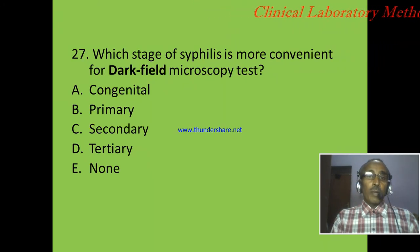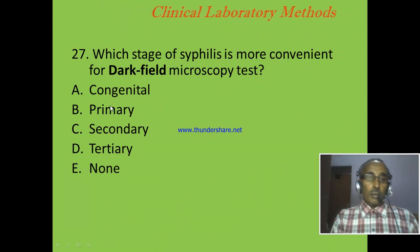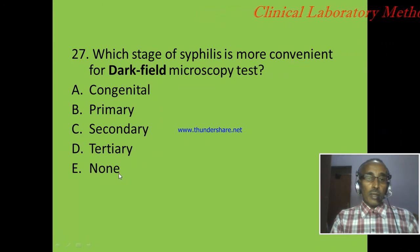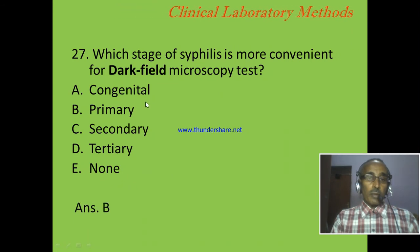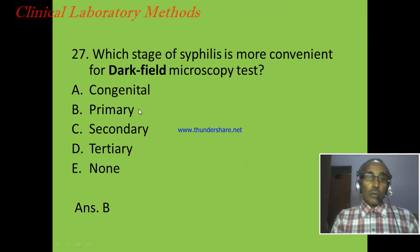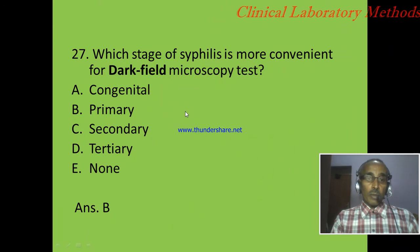Question 27: Which stage of syphilis is most convenient for dark field microscopy tests? A: Congenital. B: Primary. C: Secondary stage. D: Tertiary stage. E: None. The correct answer is B: primary stage, because during this stage there is a lesion or ulcer which can provide a good sample to detect bacteria using dark field microscopy.